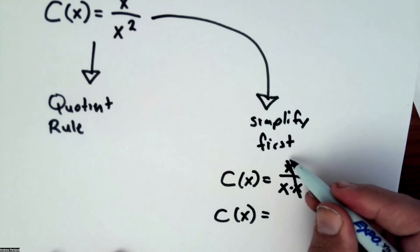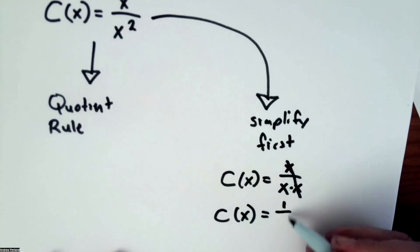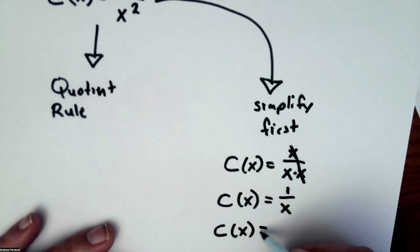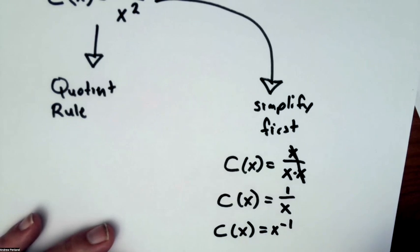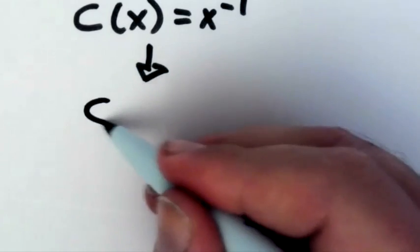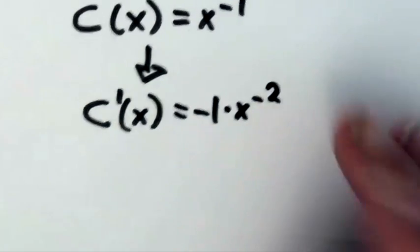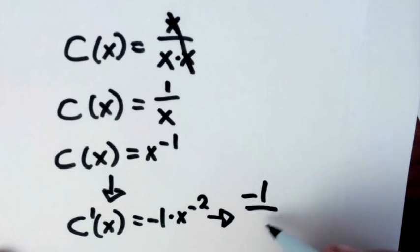This cancels and I'm left with one on top and x on the bottom, which means that I can then either know what that is or I can rewrite it as x to the negative one. And then when I go to take the derivative, C prime of x is equal to negative one times x to the negative two, which is negative one over x squared. These are equal.